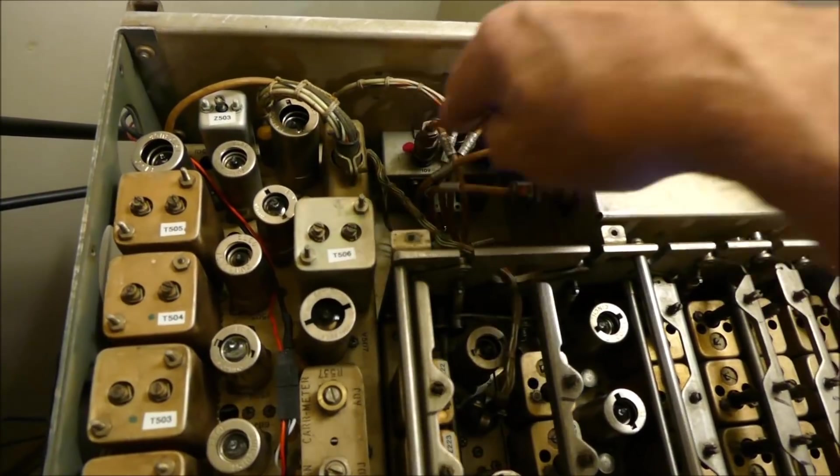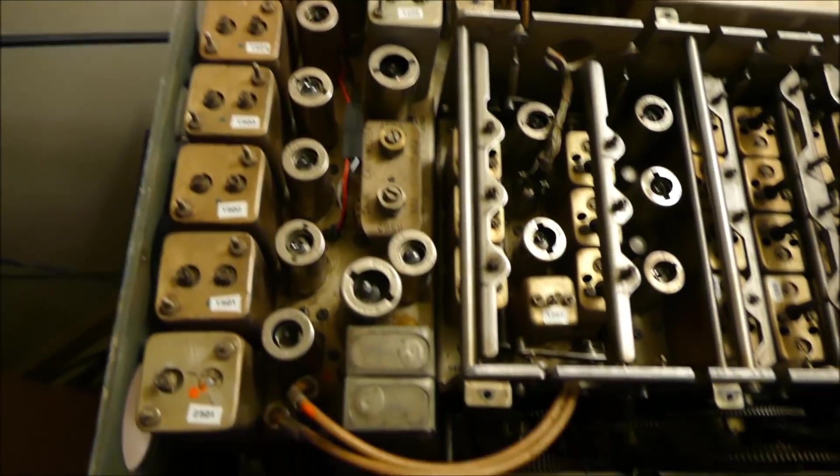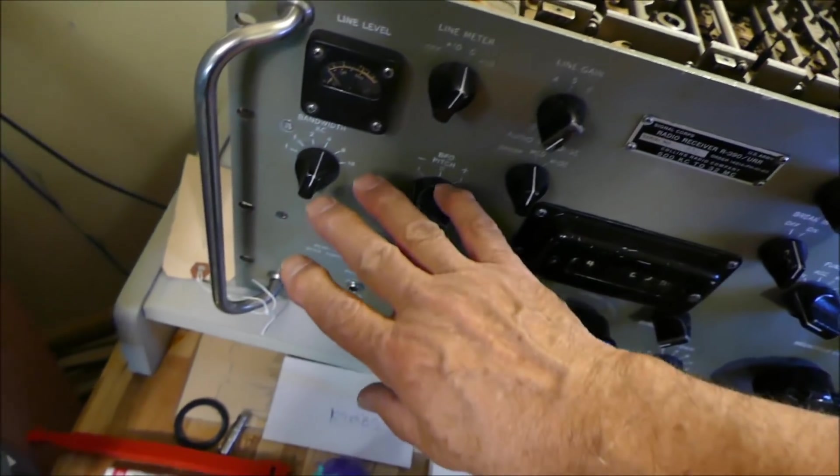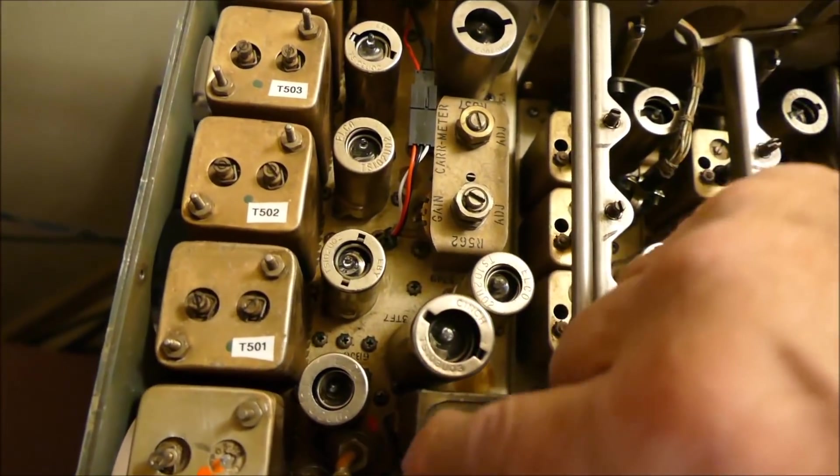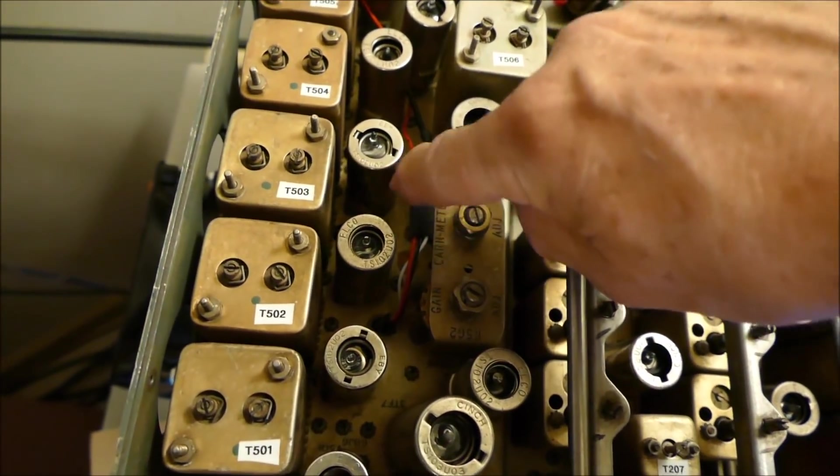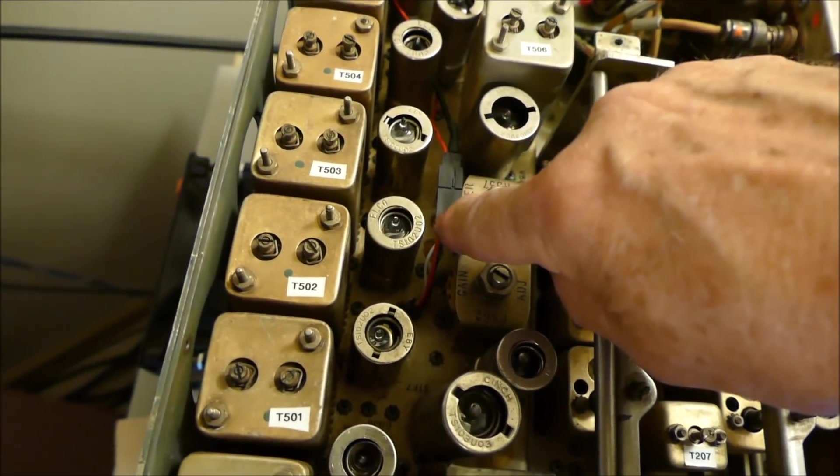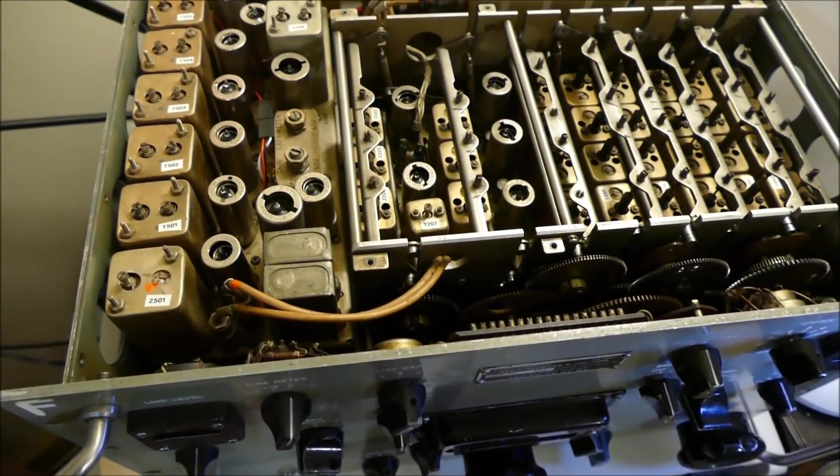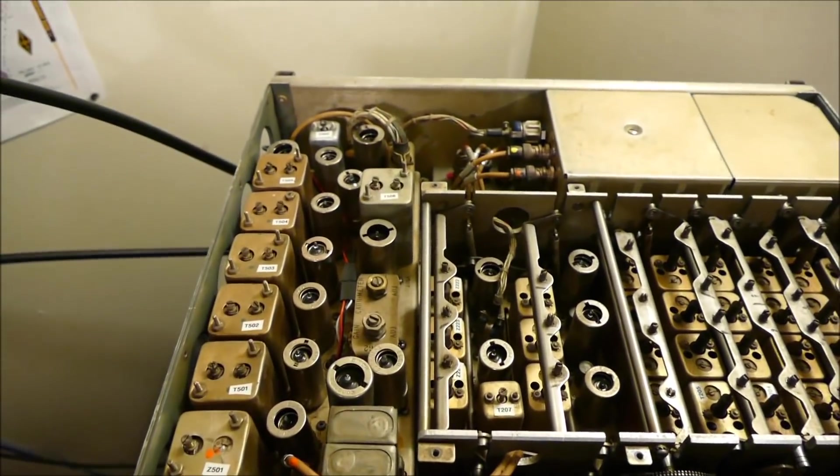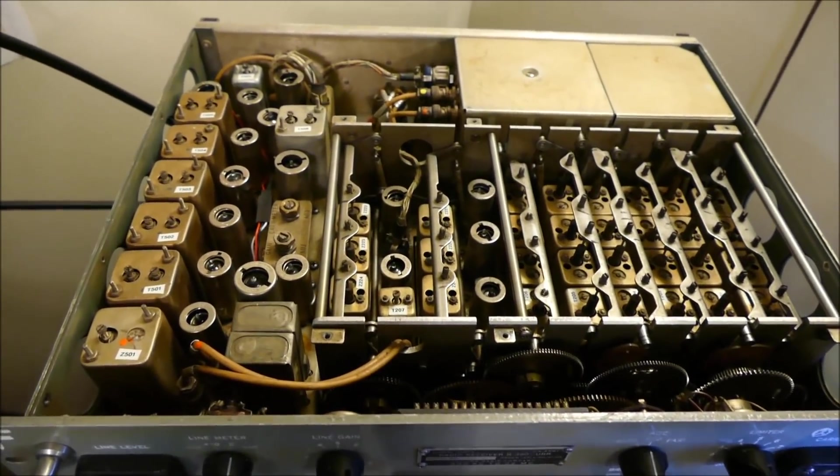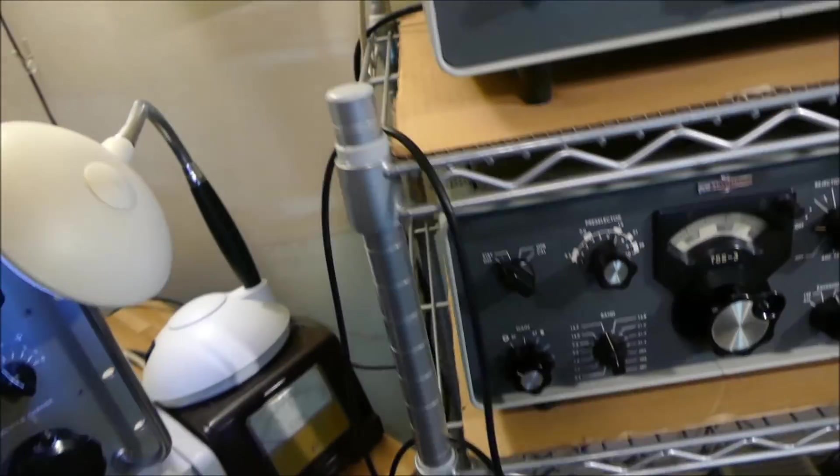To pull this module out, you have to pull the knobs off the front, remove these two screws, and there are some green screws you can remove. This thing made by Treetop is a single sideband adapter on the back. I'm going to turn it on, let it warm up for a few minutes, and we'll put a signal into it. We'll be able to switch quickly back and forth between it and this receiver.